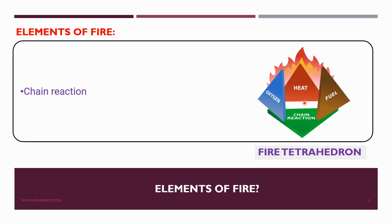Chain reaction, or chemical reaction, is the ongoing process of combustion that keeps the fire burning. The fire triangle was subsequently changed to the fire tetrahedron. This can also be referred to as fire diamond, pyramid, or combustion triangle, to reflect the fourth element.